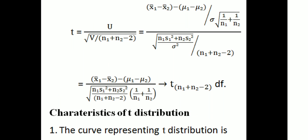By definition, t = u / √(v/(n₁+n₂-2)) = (x̄₁ - x̄₂ - (μ₁-μ₂)) / √((n₁s₁²+n₂s₂²)/(n₁+n₂-2) · (1/n₁ + 1/n₂)), which follows the student t-distribution with n₁+n₂-2 degrees of freedom.